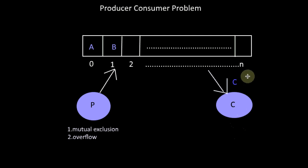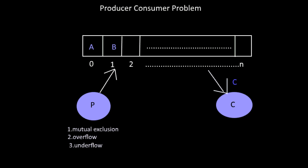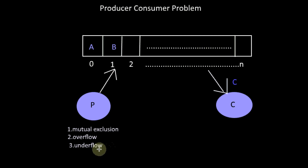If all the buffers are filled, then the producer should not try to add an item to the buffer. Similarly, if all the buffers are empty, then the consumer should not try to consume items from the buffer — that is, the underflow condition should also be handled.